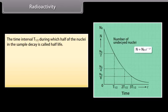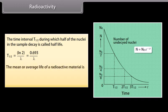Radioactivity. The time interval T½ during which half of the nuclei in the sample decay is called half-life. T½ is equal to ln2 by λ, which is equal to 0.693 by λ. The mean or average life of a radioactive material is τ, which is equal to 1 by λ.